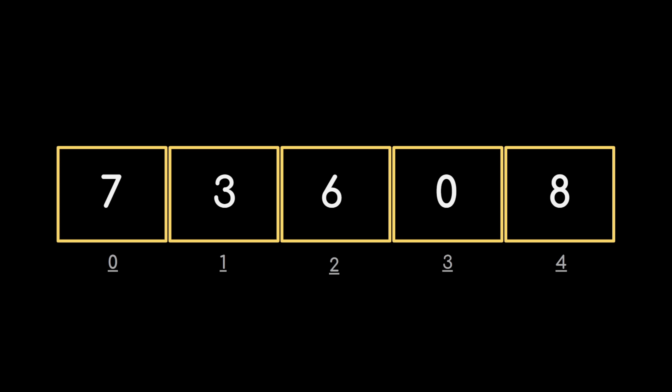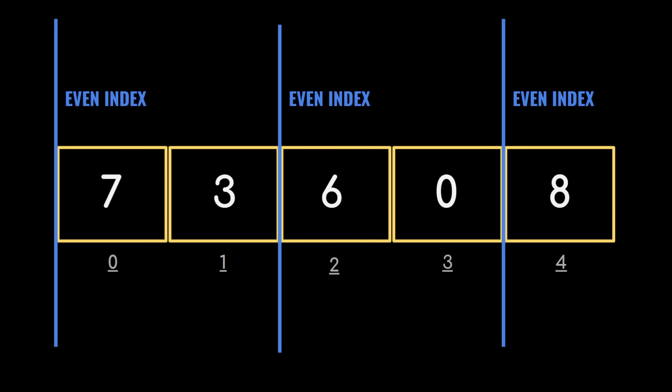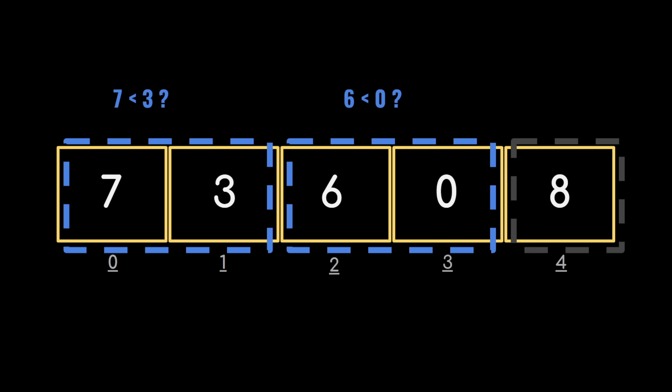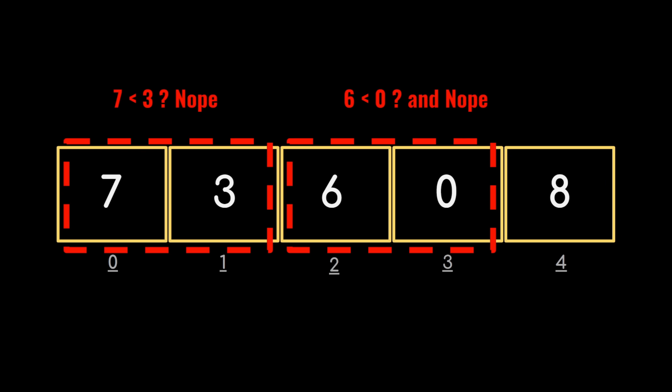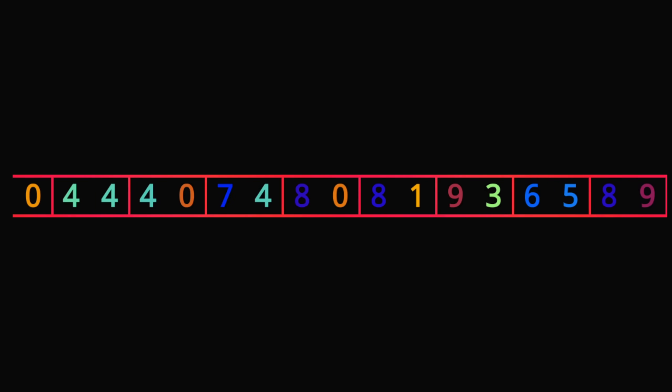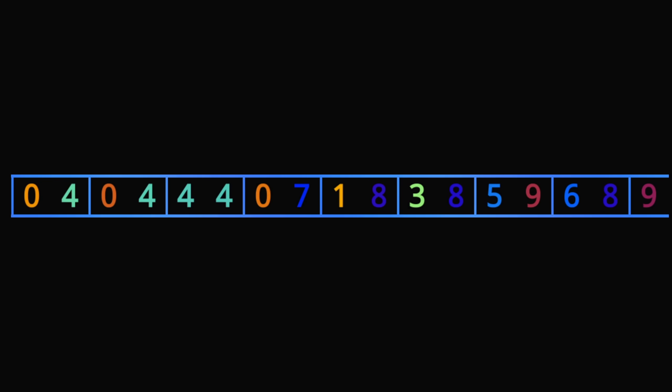Then the even round starts, and the array is separated into pairs using the even indices, and the same conditional swaps are applied. If we keep alternating between odd and even rounds, the array will get sorted.